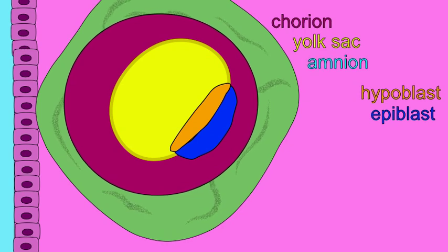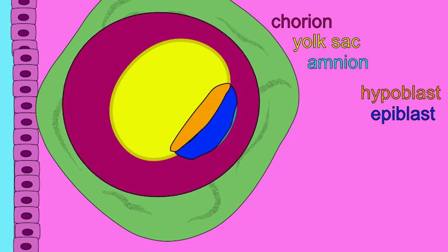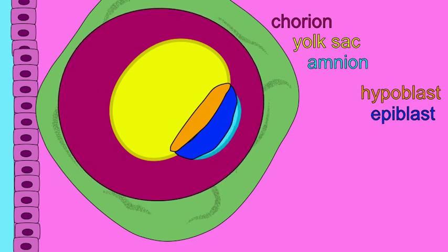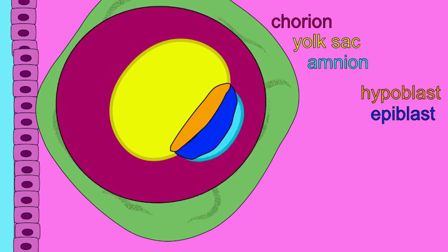Eight days after fertilization, the cells of the epiblast contribute to the formation of an extraembryonic membrane known as the amnion.